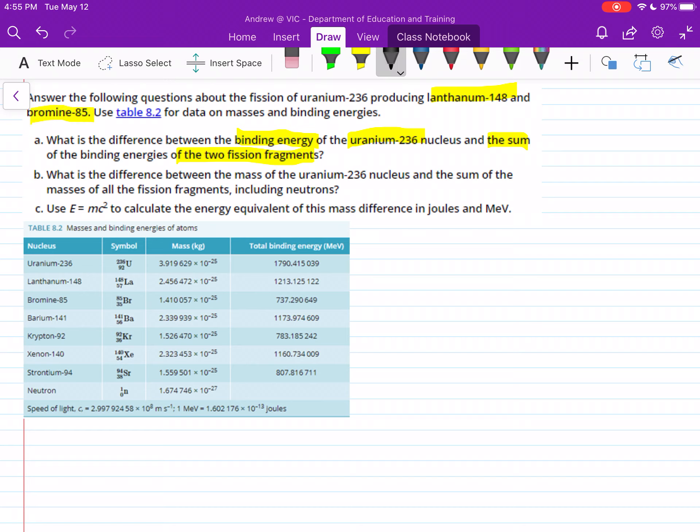What we first need to do is write out our fission equation. We have our uranium, so this is 236-92U, that's our uranium. And this is getting split into, so that's all on one side by itself.